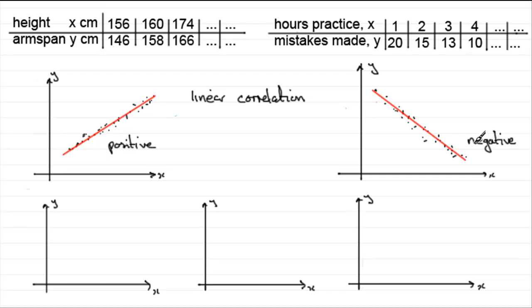Now correlation doesn't have to be linear. You could have data in a table for x and y, and when you plot the scatter diagram you might get something like this. So the points coming up like this and then going up, curving up. Now clearly this isn't linear because the relationship is something like this.